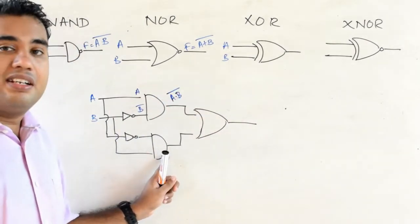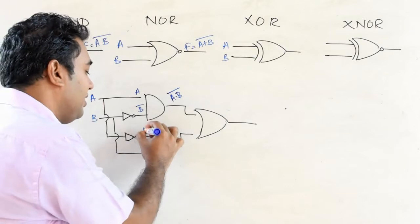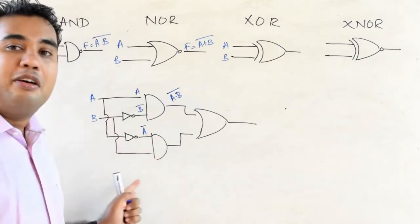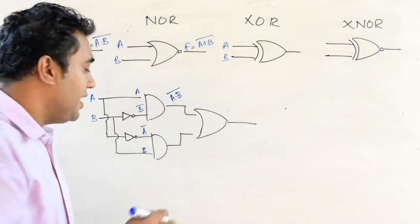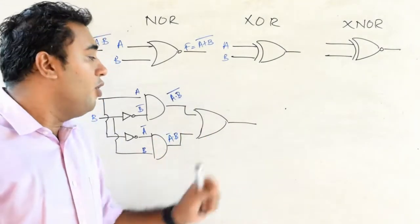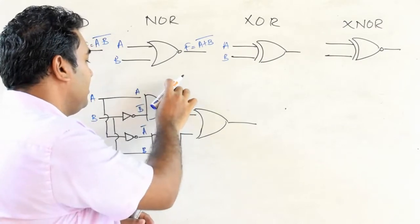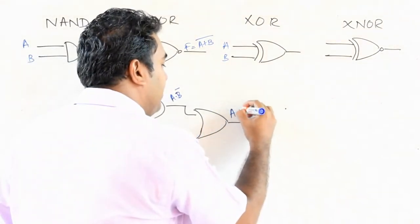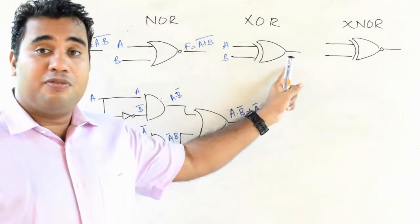For the second AND gate, the input A goes through a NOT gate to give A bar, and the other input is B. So the output of this AND gate is A bar·B. Those two results, A·B bar and A bar·B, become inputs to the OR gate. The output of the OR gate — and of the whole XOR gate — is A·B bar + A bar·B.